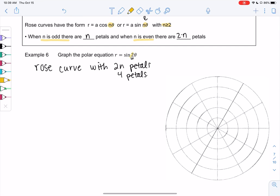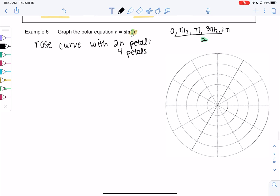Because theta has a coefficient, I'm going to plot more points. Rather than going from 0 to pi over 2, pi, 3 pi over 2, 2 pi, I'm going to divide everything by 2 to go twice as fast because the coefficient is 2. Let's set up a table: Theta, r equals sine 2 theta.